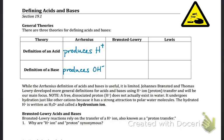According to the Brønsted-Lowry definition, an acid is anything that donates or gives away hydrogen ions, and a base is anything that accepts or takes those hydrogen ions. We're going to spend a lot of time with the Brønsted-Lowry definition, so we'll discuss this in just a moment.